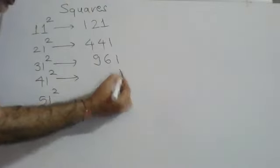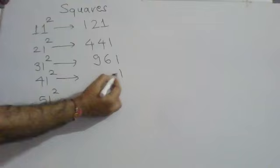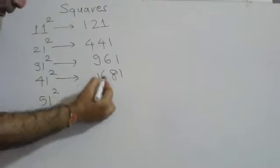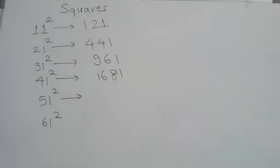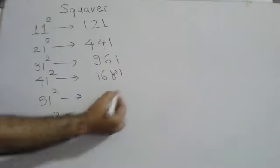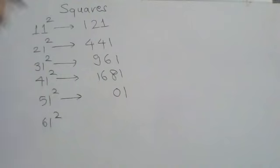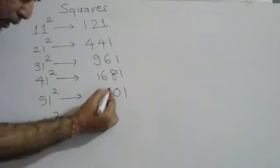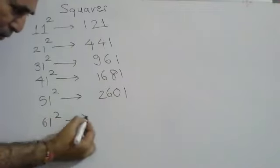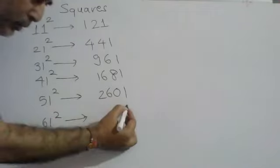Again we'll discuss 41 square - write one, double of four is eight, four square is sixteen. So 41 square equals 1681. Same with 51 square - write one, double of five is ten, five square is twenty-five plus one equals twenty-six. So 51 square equals 2601.